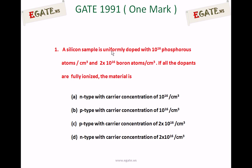This is the first question from Gate 1991. A silicon sample is uniformly doped with 10^16 phosphorus atoms per centimeter cube and 2×10^16 boron atoms per centimeter cube. If all the dopants are fully ionized, the material is: A. N-type with carrier concentration of 10^16; B. P-type with carrier concentration of 10^16; C. P-type with carrier concentration of 2×10^16; D. N-type with carrier concentration of 2×10^16.